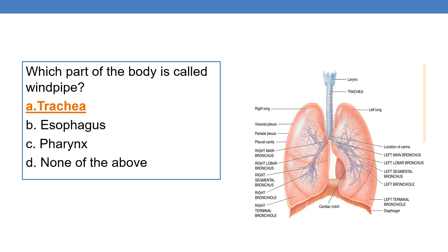Which part of the body is called as windpipe? The answer is trachea. Trachea is called as the windpipe, whereas pharynx is called as the throat.